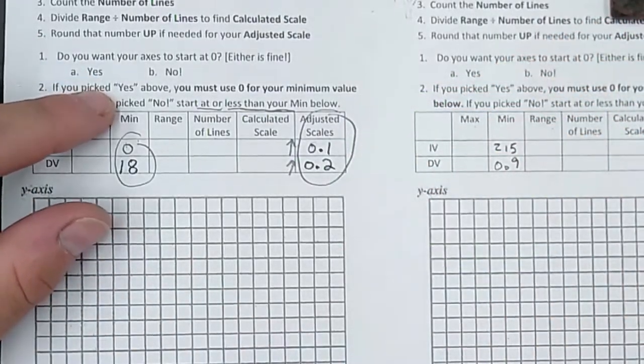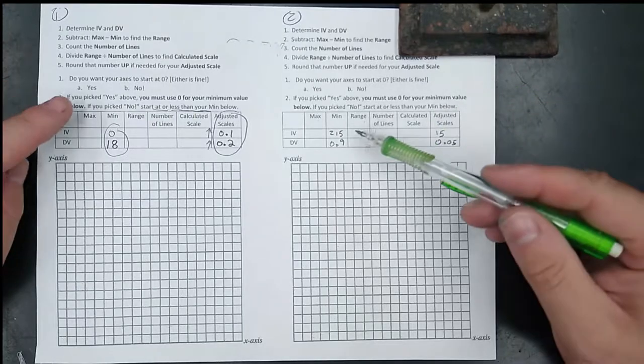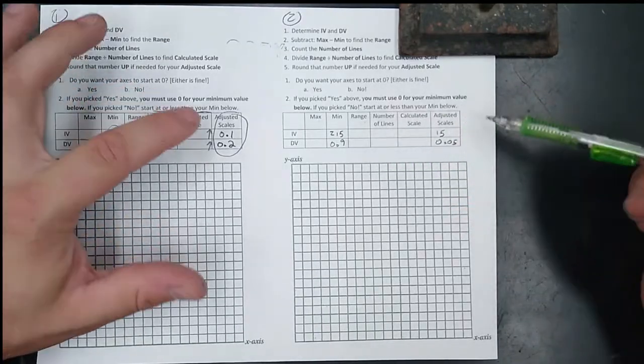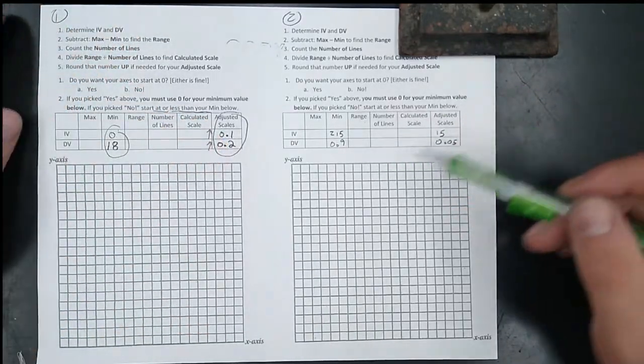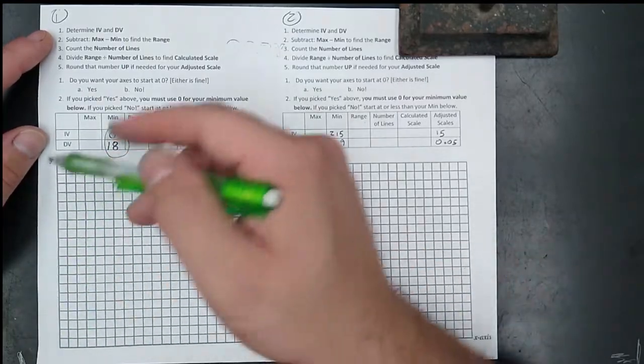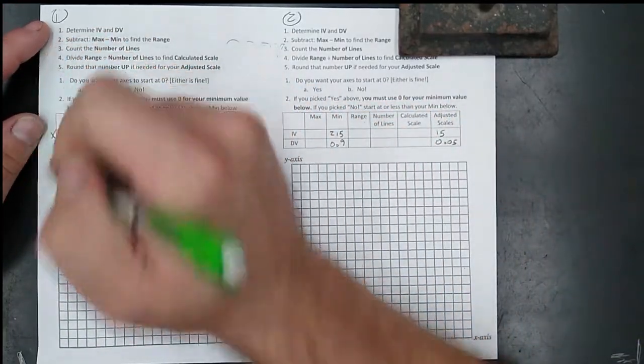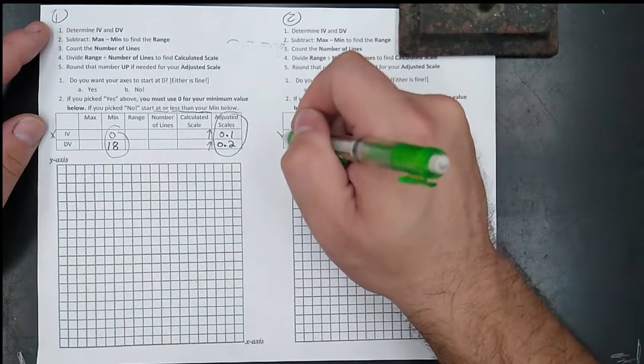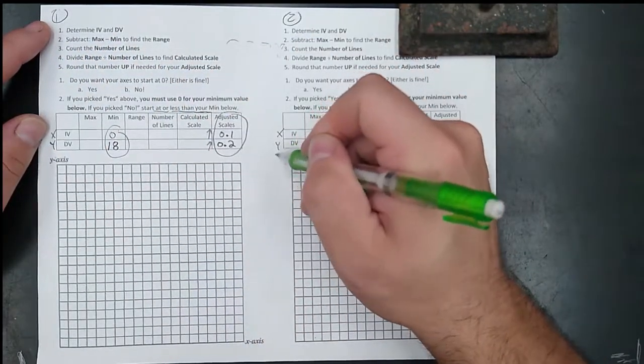On these problems, both 1, 2, and 3, and 4 in the back, the minimum is filled in for you, and the adjusted scale is already figured out. All you're going to do is fill in the scale. Remember, the independent variable always goes on the X, and the dependent variable always goes on the Y.